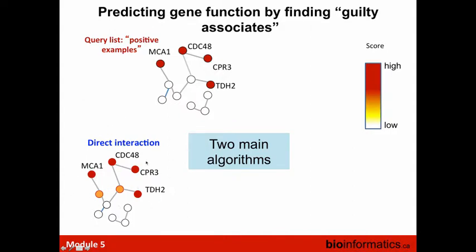These direct interaction algorithms are great but they can only assign scores to genes directly interacting with the query list. There are genes that can't be distinguished because they don't directly interact with any query-list genes. But this gene here should get a higher score than that one, because even though it's not directly connected to the query list, there are a lot of indirect interactions with the query list.